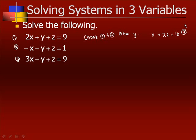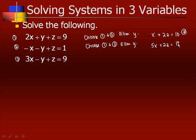Now we've got to choose two different equations — we know we've got to choose equation three. It's got a negative y, so we're going to choose equations one and three, because those already have opposite y's. We must eliminate the same variable as we did before. Adding the first and the third equation together, we get 5x plus 2z is equal to 18. This is our equation star star.